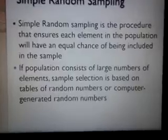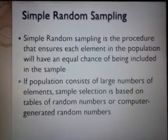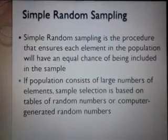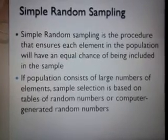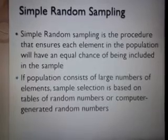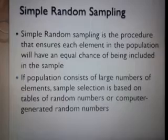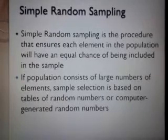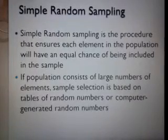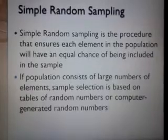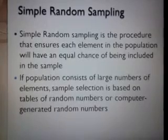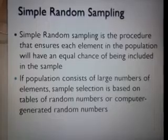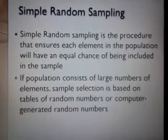First, we will discuss probability sampling. The first category of probability sampling is simple random sampling. This is the most basic, most important, and useful form of probability sampling. It is one of the best ways to collect data as part of probability sampling, and is widely used by researchers. However, proper simple random sampling is quite difficult if the sample size or population size is quite large. Simple random sampling is the procedure that ensures each element in the population will have an equal chance of being included in the sample.